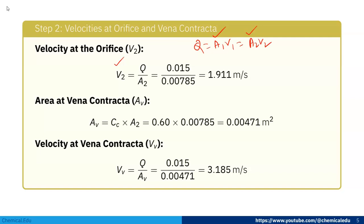Area at vena contracta Av: we know that Av = Cc × A₂. A₂ is given, so Av = 0.60 × 0.00785 = 0.00471 m².